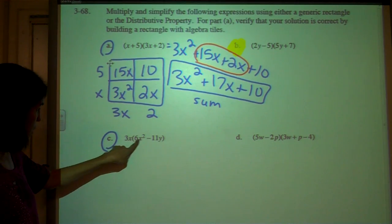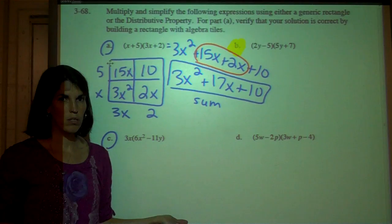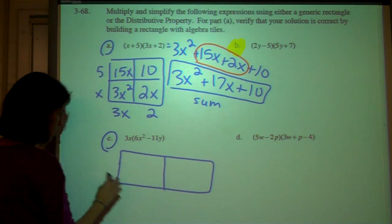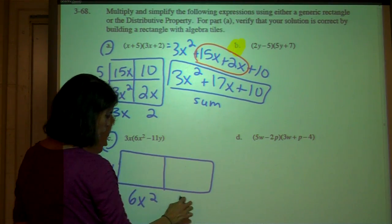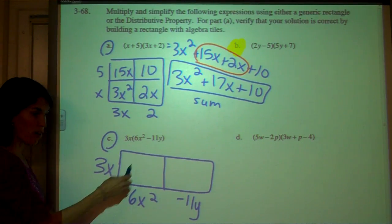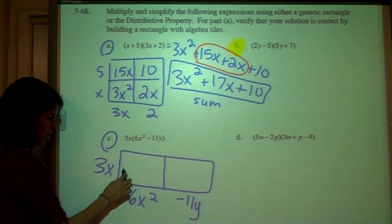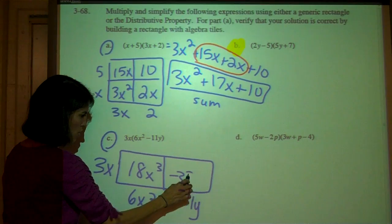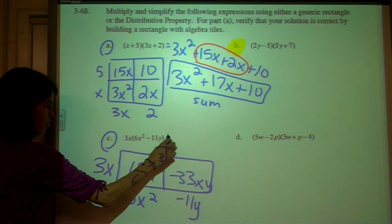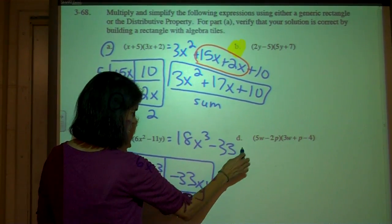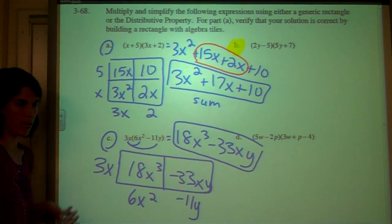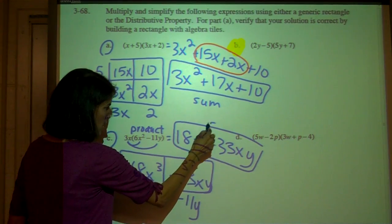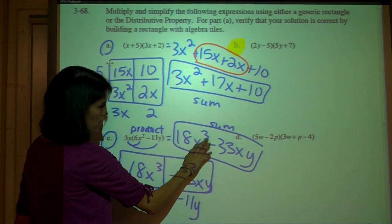Last one. This is a monomial times a binomial — what dimension generic rectangle should I use? For 2 binomials I did a 2 by 2, so hopefully it makes sense that I would do a 1 by 2. So 3x is here, 6x squared is here. I treat the subtraction as a negative. You find the area of each part: 3x times 6x squared — 3 times 6 is 18, and with x and x squared you have x cubed, so 18x cubed. A positive times a negative is a negative; 3 times 11 is 33, giving negative 33xy. The generic rectangle is just an organized way to distribute, and this is that product written as a sum — because subtracting is the same as adding a negative.